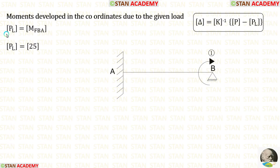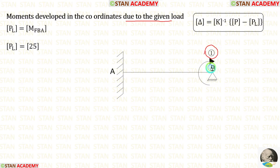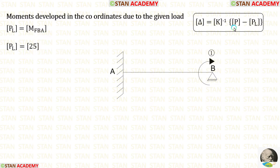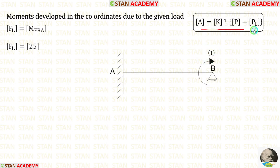The PL matrix contains the moments developed at the coordinates due to the given loads. In this analysis there is only one coordinate at point B. We have calculated the fixed end moment at B, which is MFBA. We apply that inside the PL matrix. Since there is only one coordinate, there will be only one value.